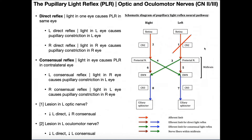What would this present as if you did this test on a person with a lesion of the left optic nerve? You would shine light in their right eye, and their right pupil would constrict because that pathway is intact. Also, if you shine light in their right eye, their left pupil would also constrict — because the right optic nerve is intact, so the right direct reflex is intact, and the left consensual is intact, since you shine light in the right eye, fibers cross over, and you get constriction of the left pupil. So in a person with a left cranial nerve 2 lesion, you'd have the right direct reflex and the left consensual preserved. You'd shine light in their right eye and get constriction in both the right pupil and the left pupil.